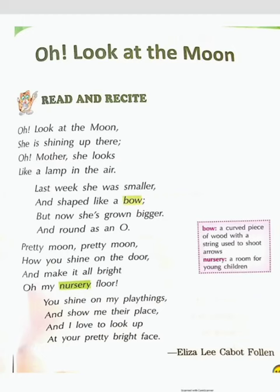Hello children, today I am going to recite a beautiful poetry written by Eliza Lee Cabot Follen. The name of this poem is Oh Look at the Moon. In this poem, there is a small child who is fascinated by the shape and brightness of the moon. So children, let's begin with this poem and see how the moon is described in the words of a small child like you.